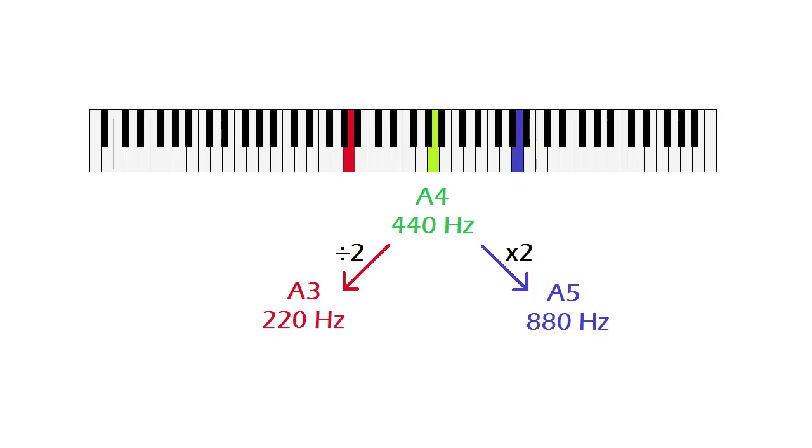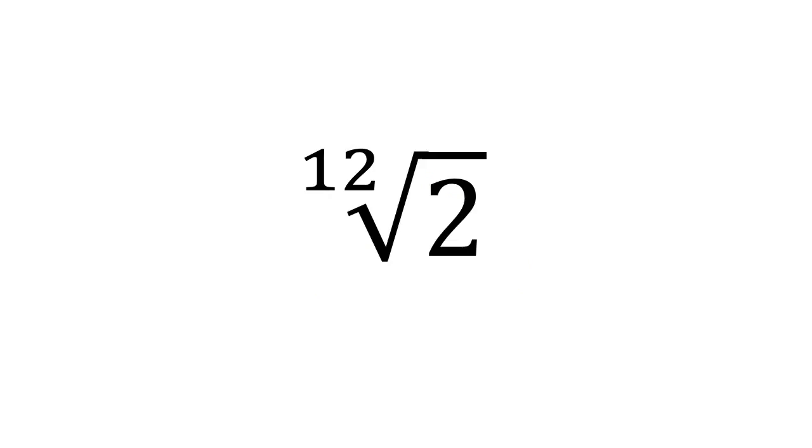And we had already said in the previous video that the frequency of the same note in the next octave is its frequency multiplied by 2, didn't we? That is the origin of the twelfth root of 2. This number basically tells us that for each twelve semitones, we get double the frequency.